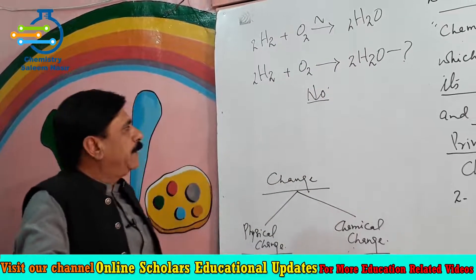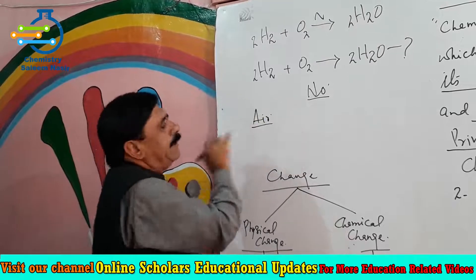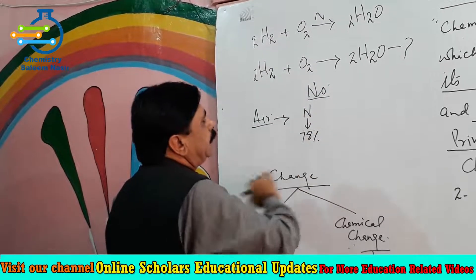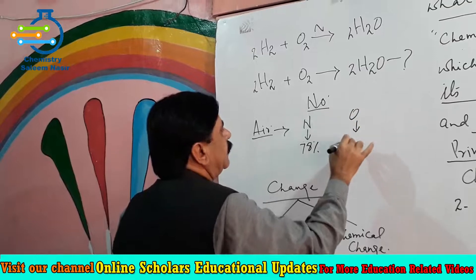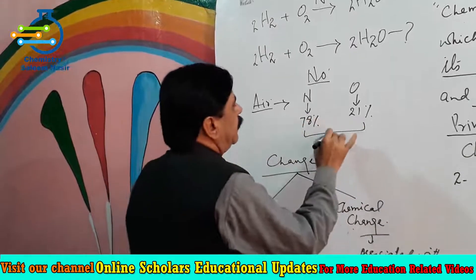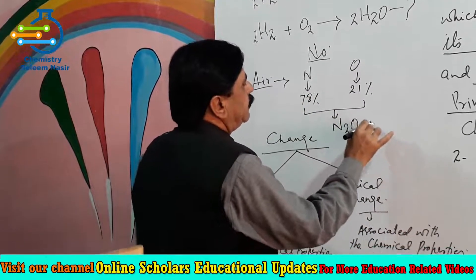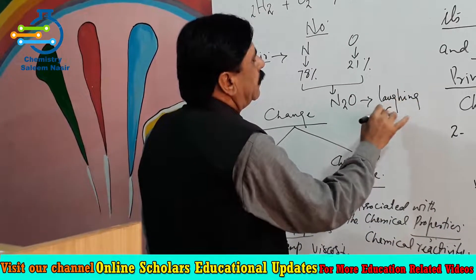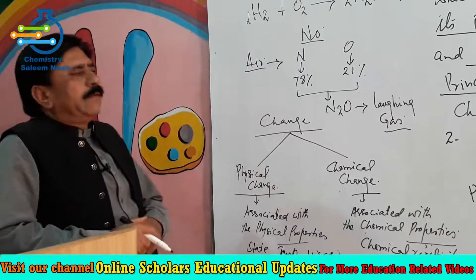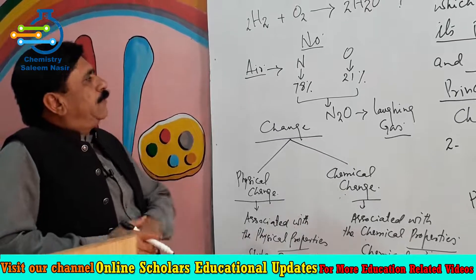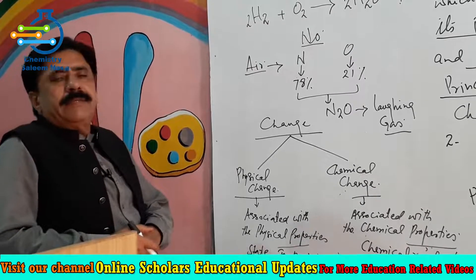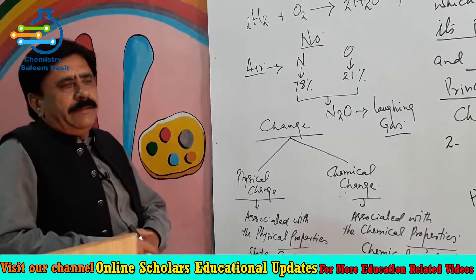We know that in the air, nitrogen is present at 78% and oxygen is present at 21%. They can combine to give nitrous oxide, that is called laughing gas. The question arises: in the bulk presence of oxygen and nitrogen in the air, why is the laughing gas not produced in the atmosphere?